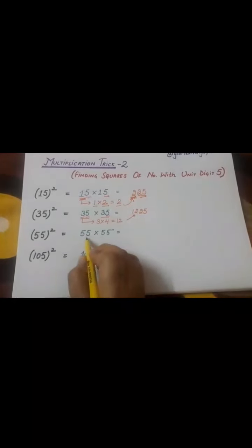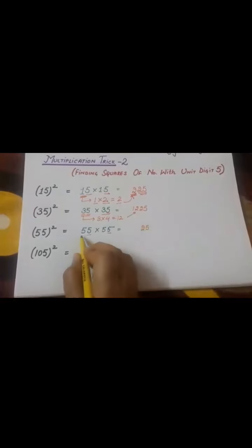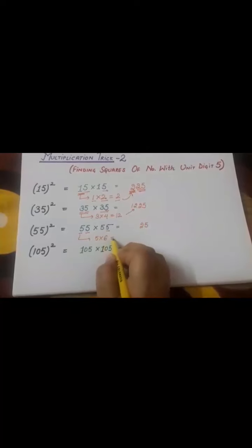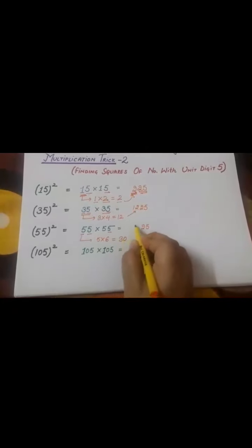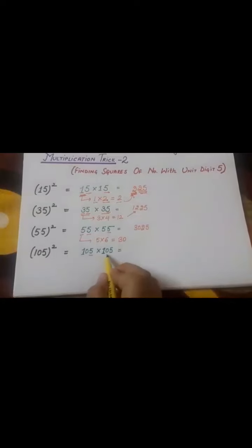55 into 55. 5 into 5 is 25 again. Then 5 multiplied to its successor, 6, equals 30. So we get 3025. Next is 105.